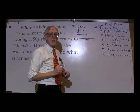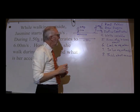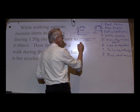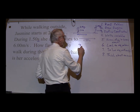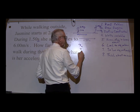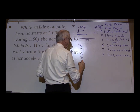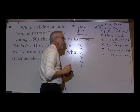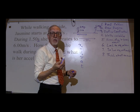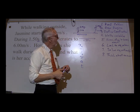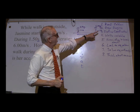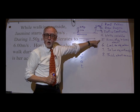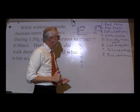Write down the variables. Let's write our variables — what are they? X naught, X, V naught, V, A, T. What do we know? What don't we know? And what do we want?